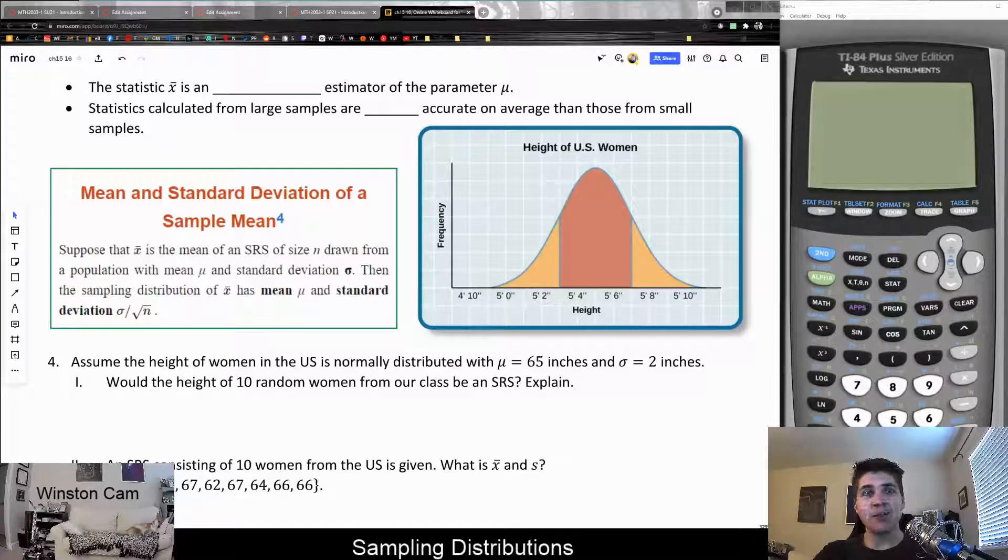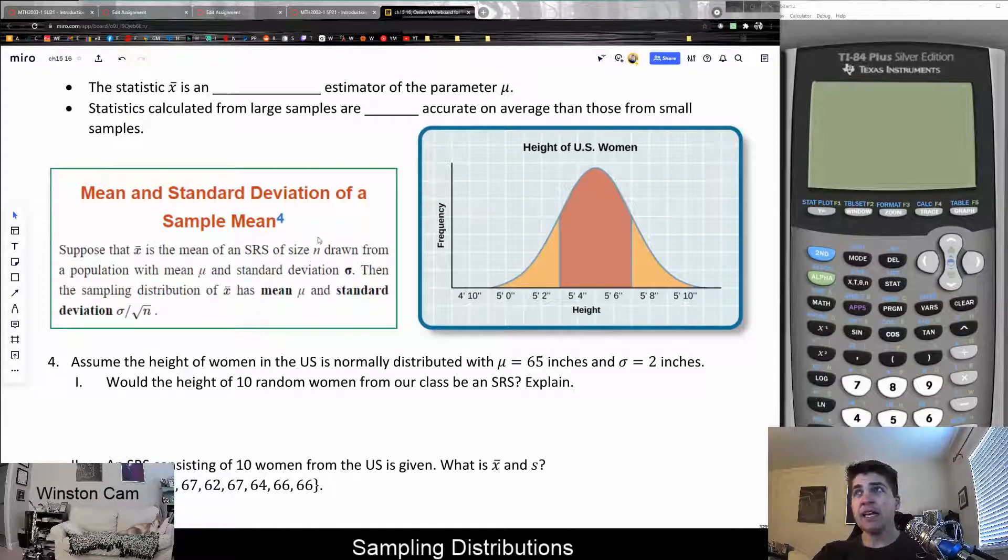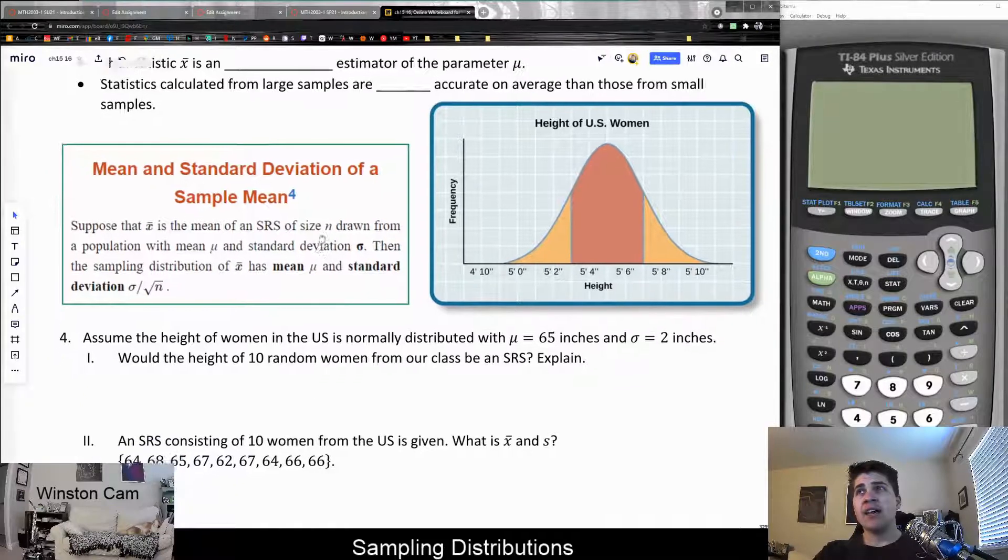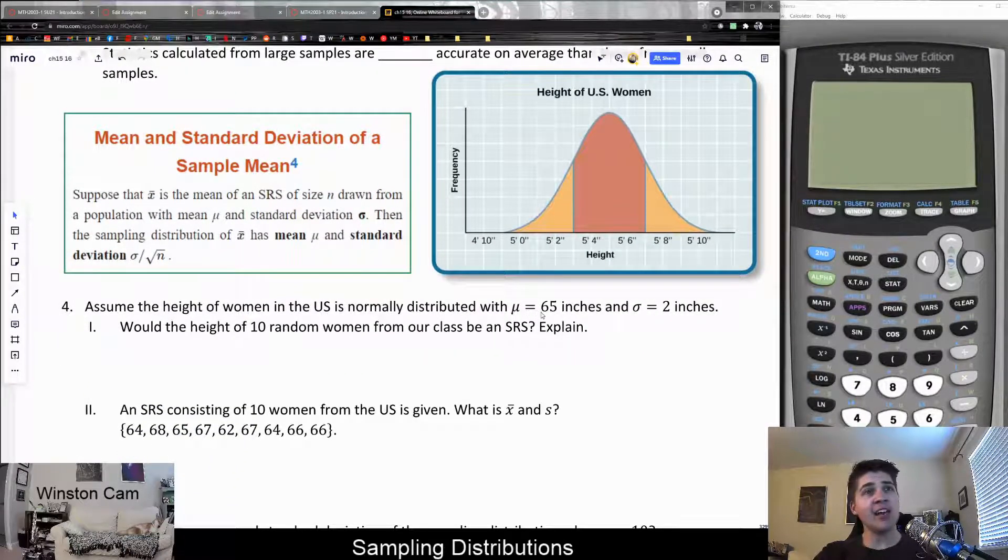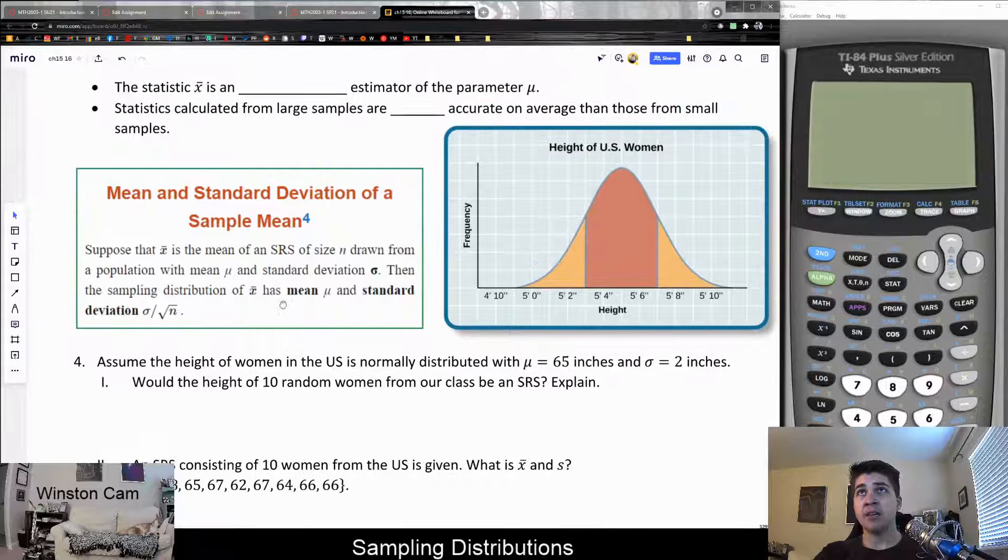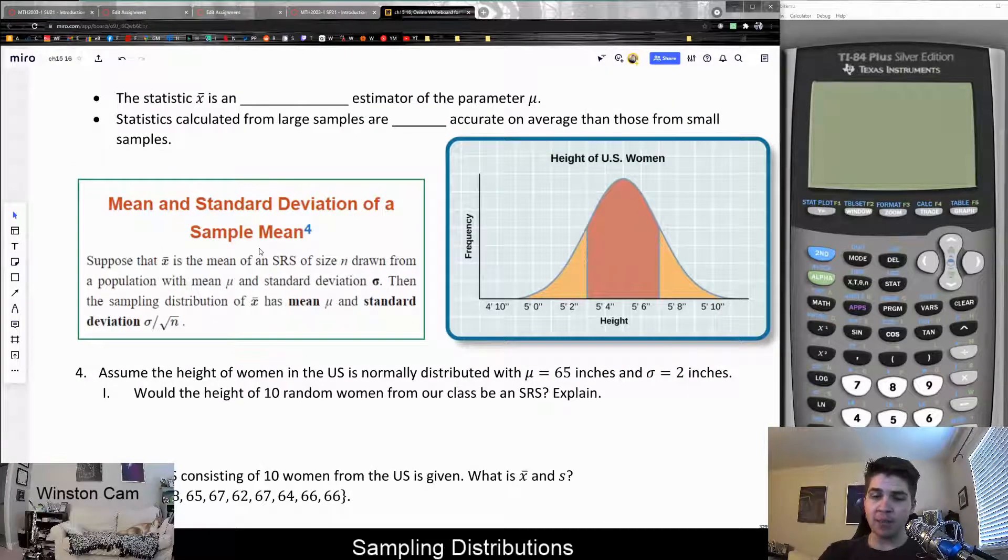Let's look at the next example in our packet for today. It says assume that the height of women in the U.S. is normally distributed with a mean value of 65 inches and a standard deviation of 2 inches. So we looked at this problem last week, I believe. Let's go ahead and finish filling in the blanks.